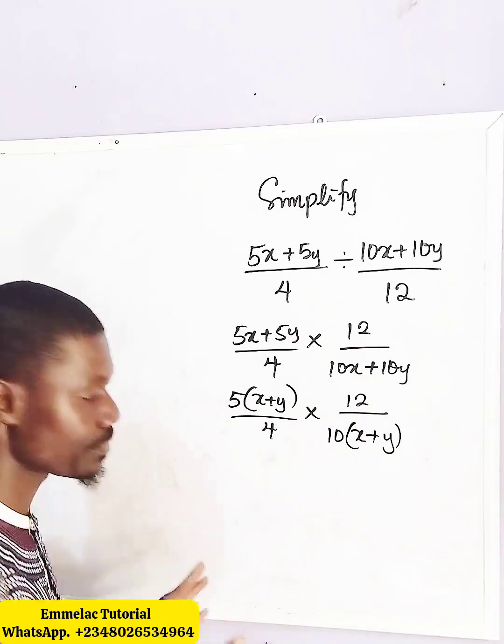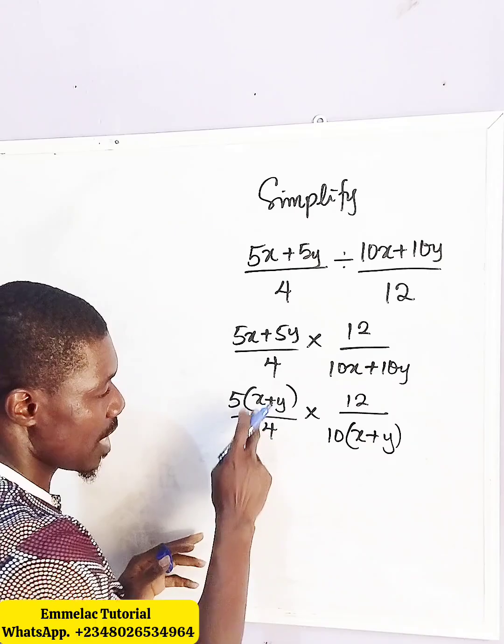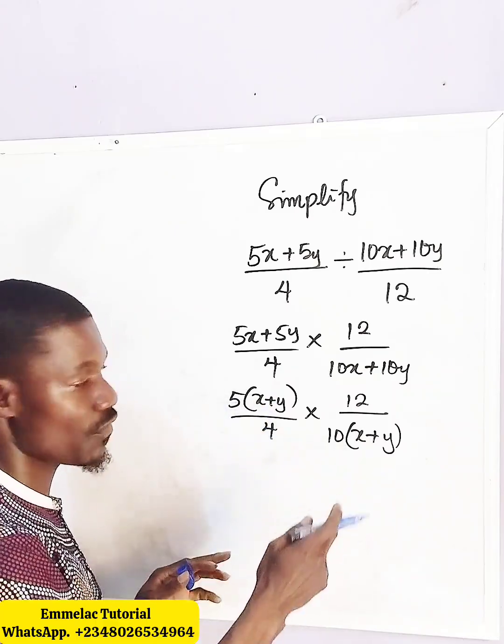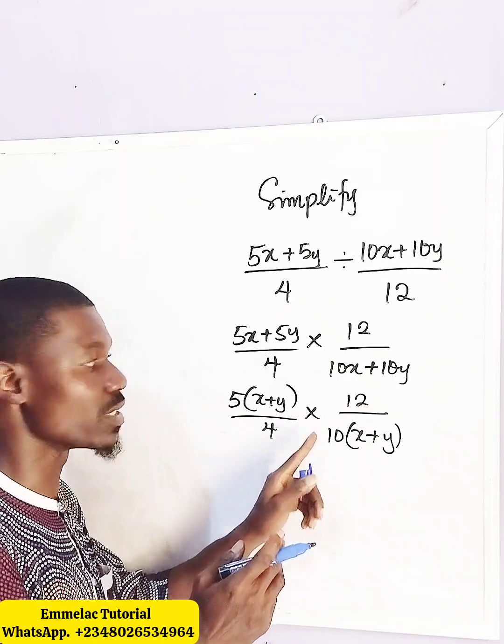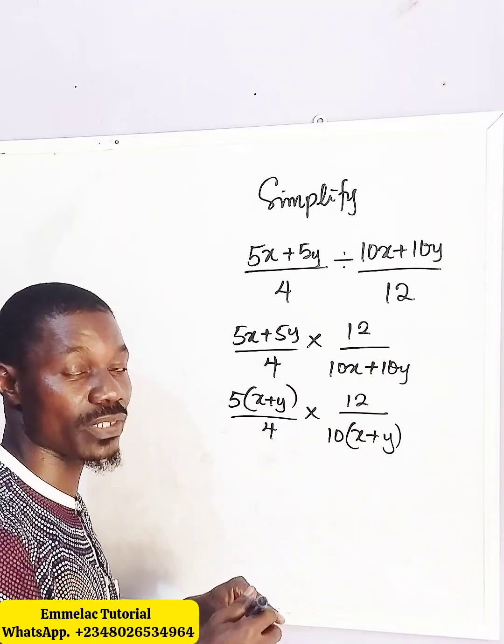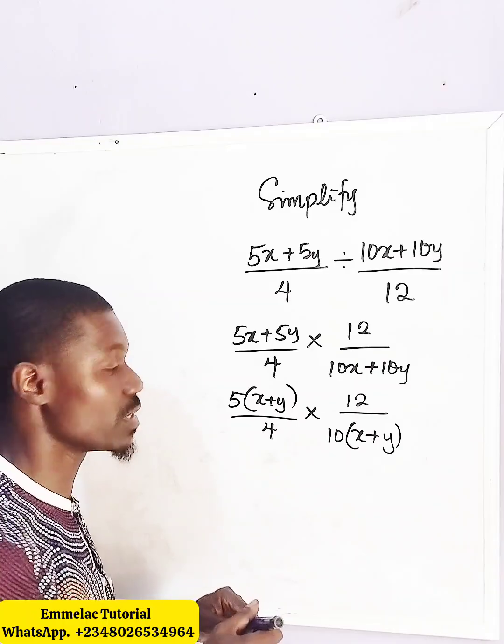Now we can see we are getting somewhere. x plus y, x plus y is a common factor. As long as you have a multiplication sign, then you can eliminate. But if you have a plus sign or negative sign, you don't eliminate.